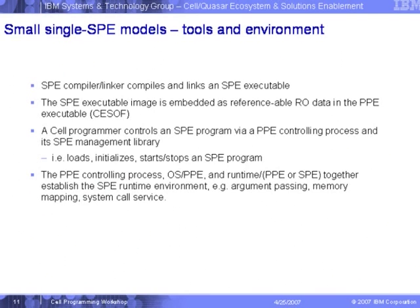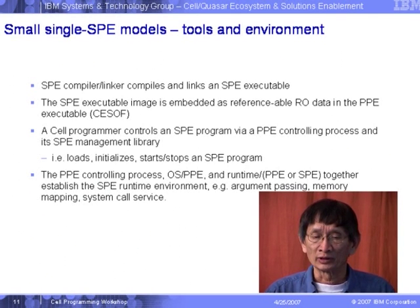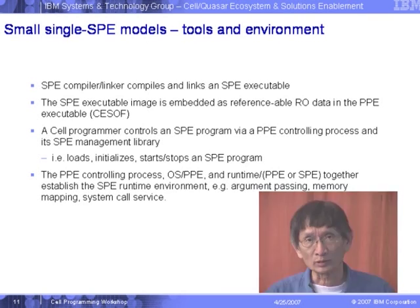The address space between the EA and the local store has a line that delimits them, and the mapping will be done by your MMU and the MFC. Everything is done for you by going through the DMA and memory transfer functions — for example through the MMU — and those will be translated automatically. In the small single SPE programming model, everything will be nice and manageable. The tools and environment give you compilers, libraries, the linker, and loaders to initialize, load, and start your program.